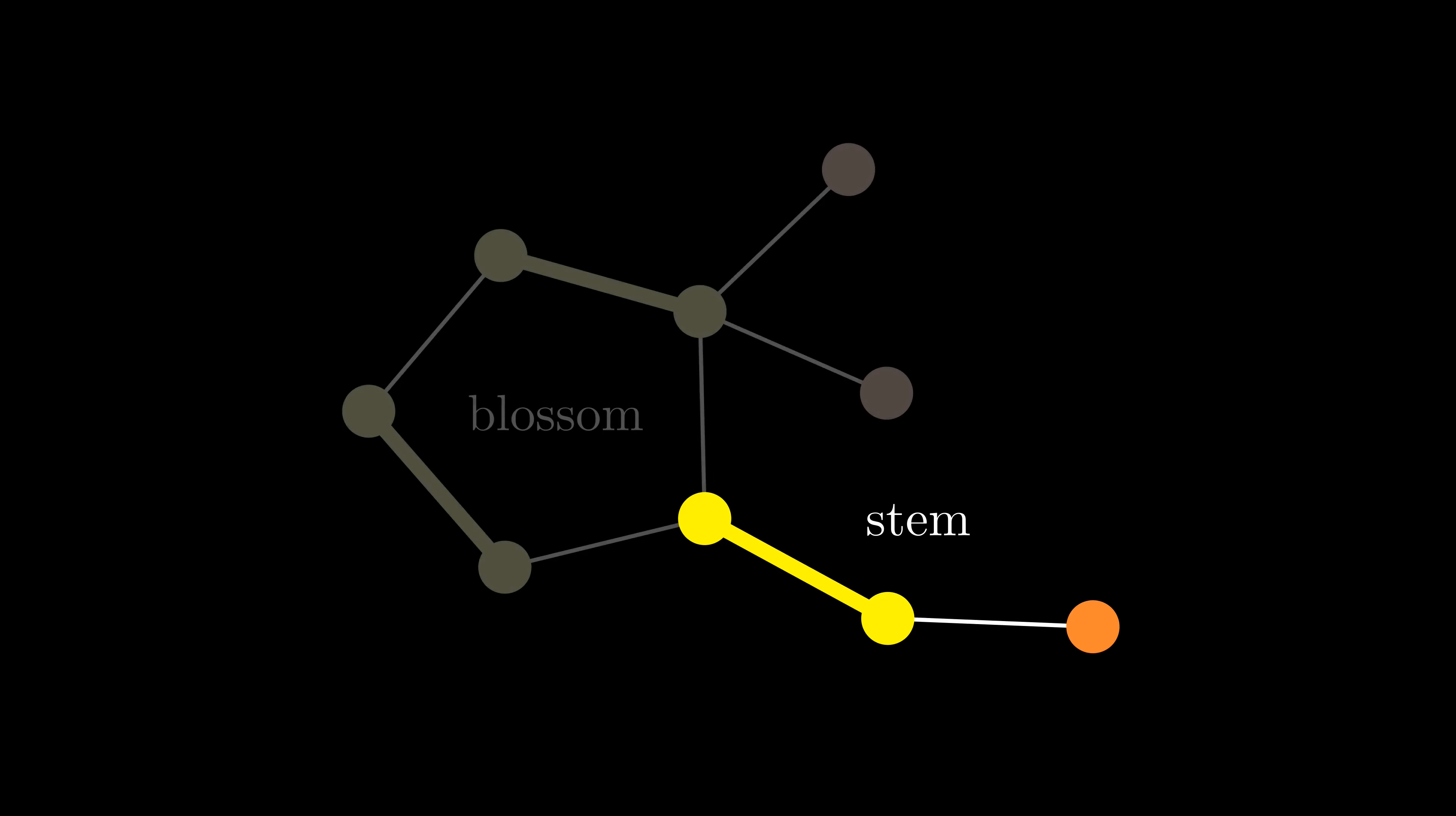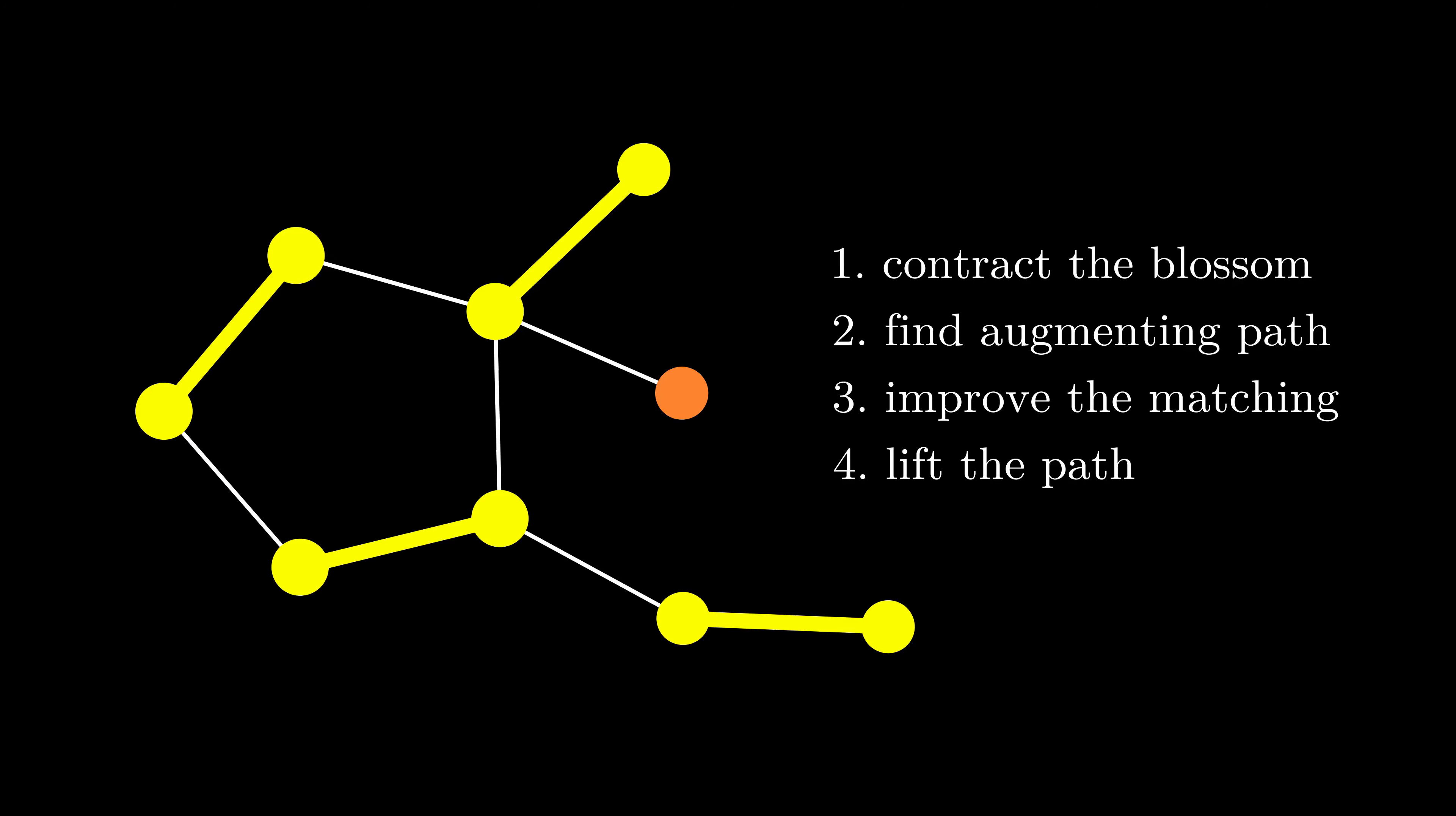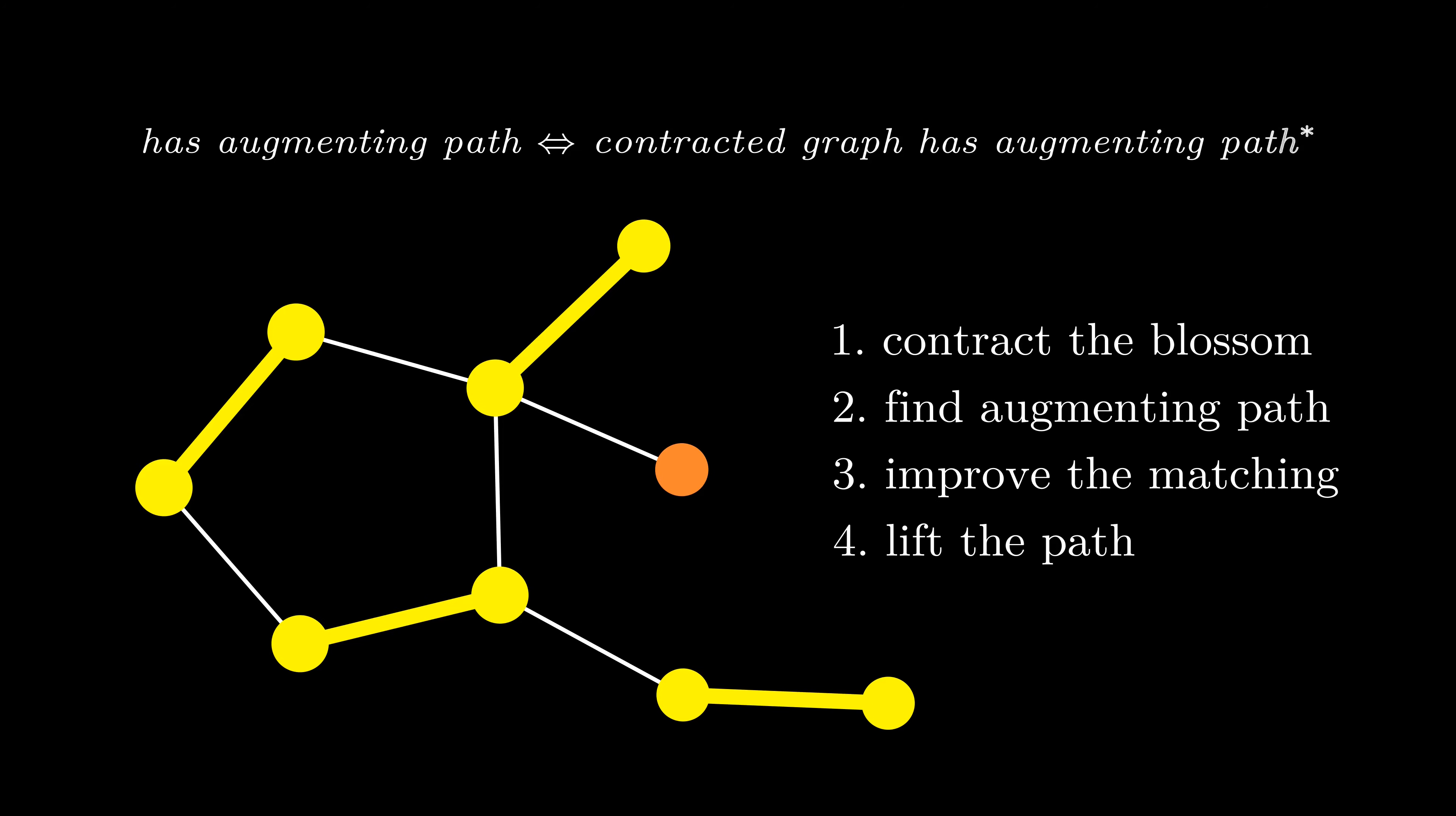Third, we'll improve the matching using this augmenting path. And fourth, we'll lift the path back to the original graph. Here, we are relying on the fact that the graph has an augmenting path, if and only if the contracted graph has an augmenting path.